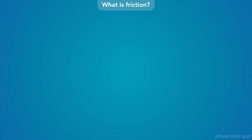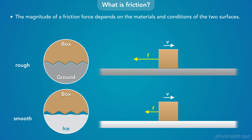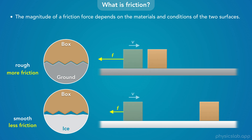But some surfaces are rougher than others, and the magnitude of the friction force depends on the materials and conditions of the two surfaces. So this ground might be pretty rough, but what if the box was sitting on something like ice? Ice is pretty smooth, and the bumps on the surface aren't as big. So there would be more friction between the box and the ground, and less friction between the box and the ice. If we slide the boxes with the same initial speed, the friction force from the ground is greater, so the box slows down sooner. The friction force from the ice is smaller, so the box travels farther before it stops.